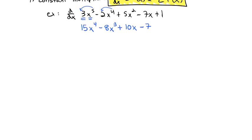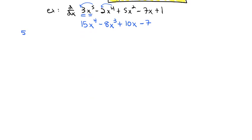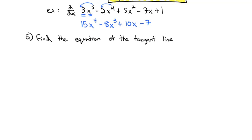Now we should be able to quite quickly find the equation of the tangent line to f of x equals 4x cubed minus 2x squared plus 5x minus 1 at x equals negative 1. First, we need to know what the y coordinate is that we're going to end up with. Actually, let's first find the derivative.